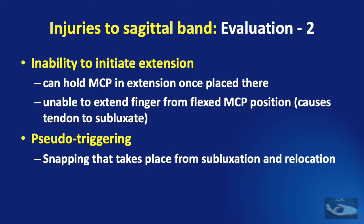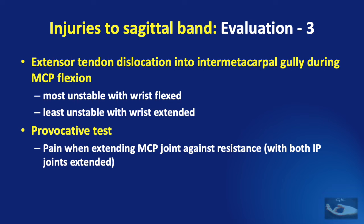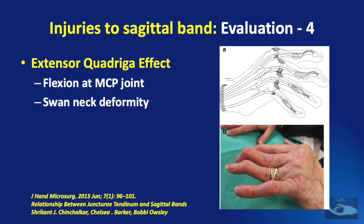The snapping at the metacarpophalangeal joint from subluxation and relocation of the extensor tendon may mimic triggering of the finger. The extensor tendon dislocating into the intermetacarpal gully during metacarpophalangeal joint flexion is most unstable with the wrist flexed and least unstable with the wrist extended. Pain may be elicited when extending the metacarpophalangeal joint against resistance with both interphalangeal joints kept extended — a provocative test. The extensor quadriga effect may also be seen: when even a single finger sagittal band is involved, it can lead to flexion at the metacarpophalangeal joint and sometimes a swan neck deformity.